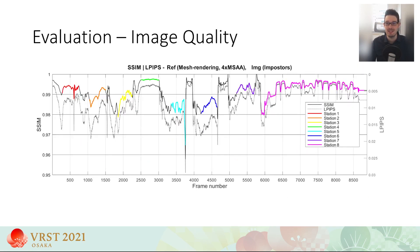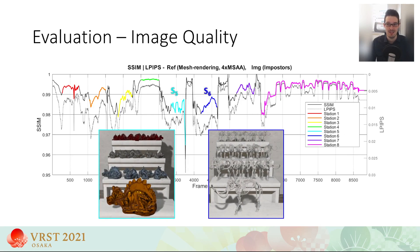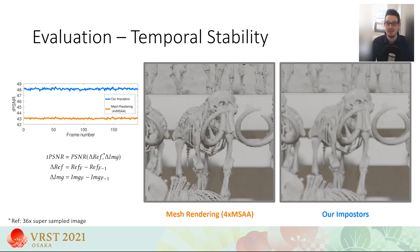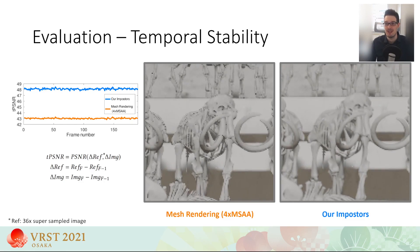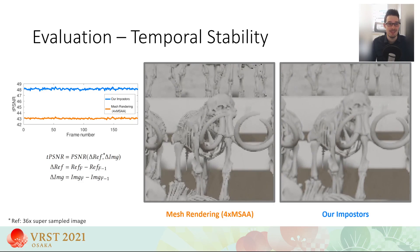For image quality, we compared our technique to mesh rendering using the SSIM and LPIPS metrics. Throughout the sequence, our impostors are very close to the reference, as we achieve SSIM scores between 0.98 and 0.99. The lowest scores are achieved at stations 5 and 6, which showcased objects with highly specular reflections and objects with a high disocclusion potential. To evaluate the temporal stability of our approach, we captured a sequence of 190 frames exhibiting typical head sway movements. We used the TPSNR metric, which computes the peak signal-to-noise ratio between the different images of two subsequent frames. Our technique achieves a higher TPSNR score than the mesh-based rendering method with 4x MSAA. The improved temporal stability can also be seen in the accompanying videos.